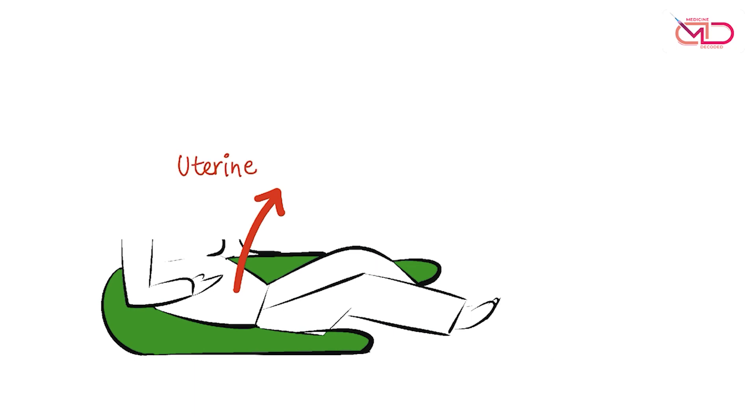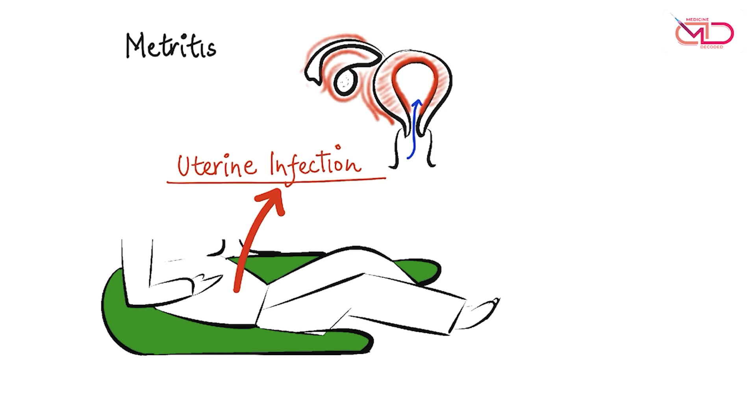Coming down, make sure you look for signs of uterine infection, which happens because of ascending infection from the lower genital tract, begins as endometritis, can spread outwards leading to metritis with pelvic cellulitis, what we call as puerperal sepsis.